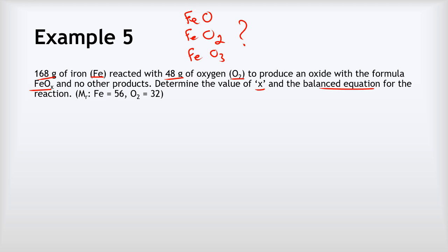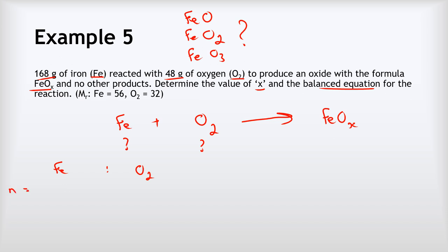We can write the starting equation as: Fe + O₂ → FeOₓ. Now let's find the mole ratio of iron to oxygen. Moles of Fe = m/MR = 168 grams divided by 56, giving 3 moles of Fe.